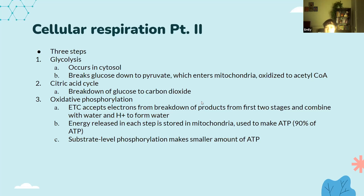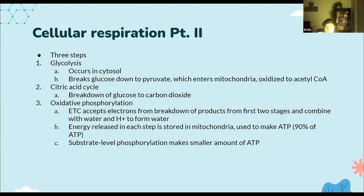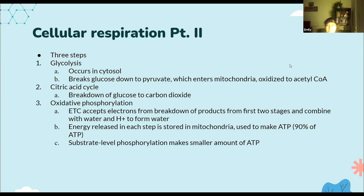Oxidative phosphorylation is where the electron transport chain is implemented. The higher an electron is, the more energy it has, but it can't immediately release all of its energy, so it releases it in steps — that's the electron transport chain. It accepts electrons from the first few steps and the breakdown products. Water is also formed in this step. The energy released is used to make more ATP, which is an efficient process. There's also substrate-level phosphorylation, which makes smaller amounts of ATP and is not as efficient.